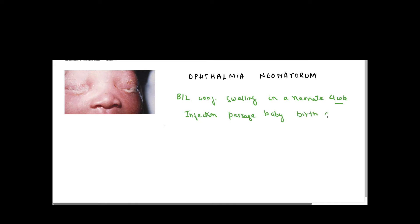If there is an infection in the birth canal, then the chances of causing Ophthalmia Neonatorum are very high. Any type of bacterium or virus can cause Ophthalmia Neonatorum. The important causes to remember are: Chlamydia trachomatis, which is the most common cause.